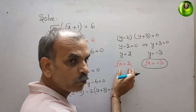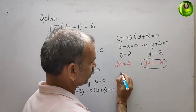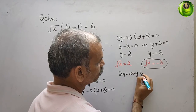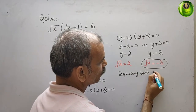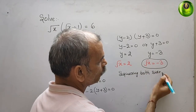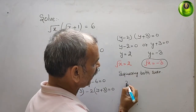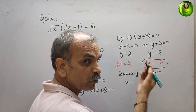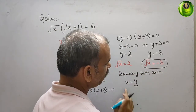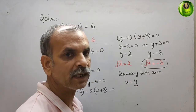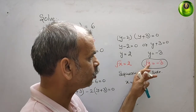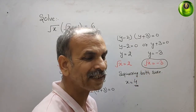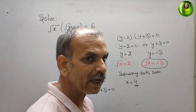We take √x = 2 and square both sides to find x. Squaring gives x = 2² = 4. So x = 4 is our answer. Do not use √x = -3 since a square root should never be negative.